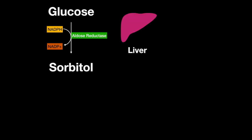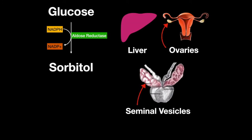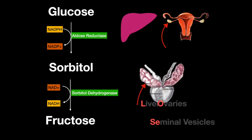However, in the liver, ovaries, and seminal vesicles, the pathway continues by being oxidized by sorbitol dehydrogenase and NADPH into fructose, where it can enter glycolysis. These cells lose sorbitol.